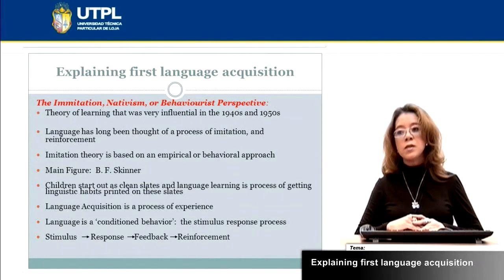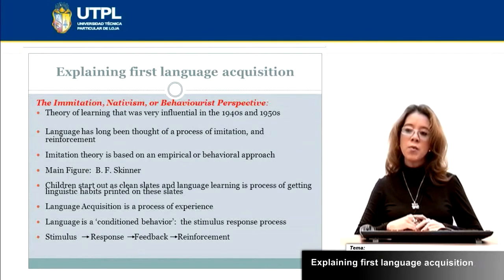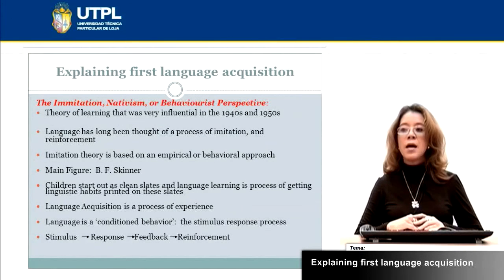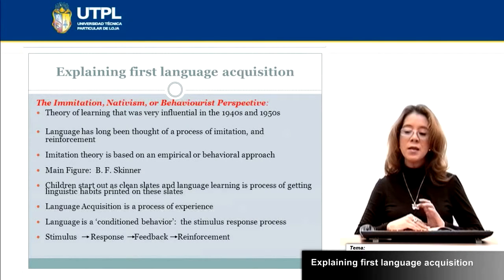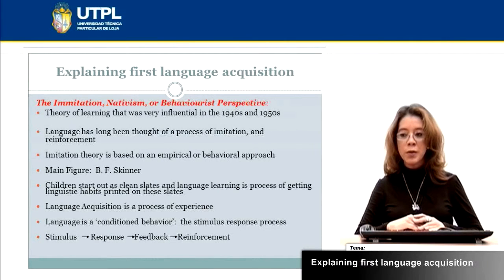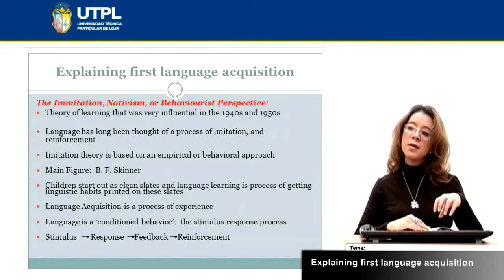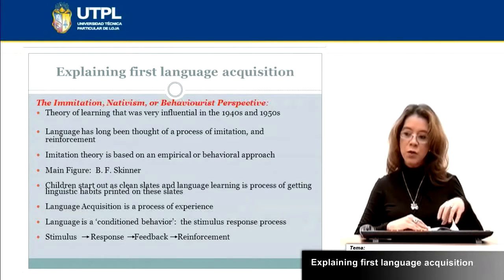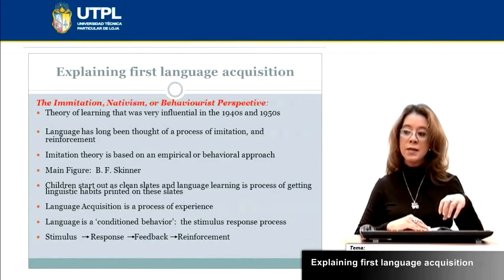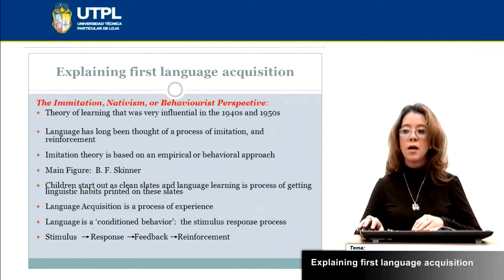The main figure of this theory is Skinner. This theory is based on imitation. Skinner mentioned that language acquisition is a process of experience. In order to understand how languages function, Skinner proposed the stimulus-response process: stimulus, response, feedback and reinforcement.